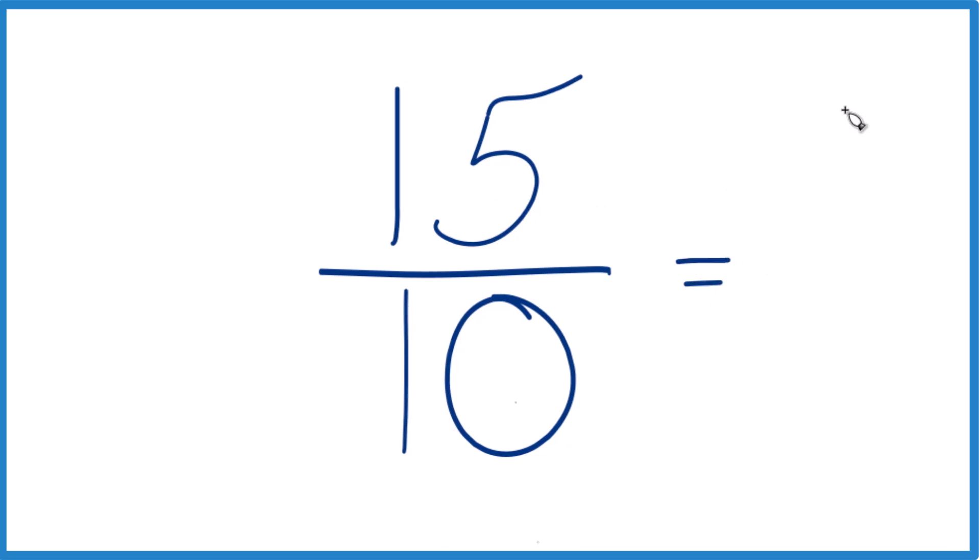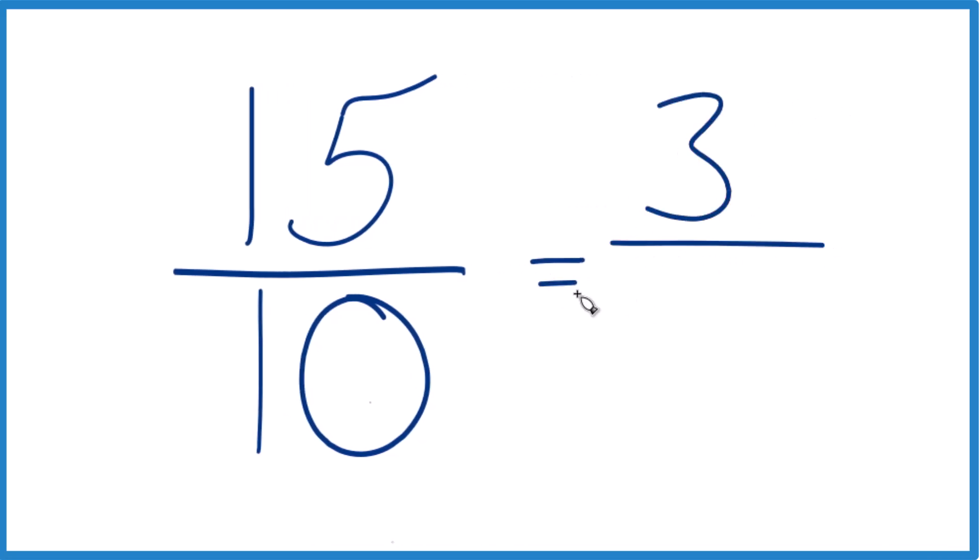So 15 divided by 5 is 3. 10 divided by 5 is 2. So we could simplify 15 tenths down to 3 halves, 3 over 2.